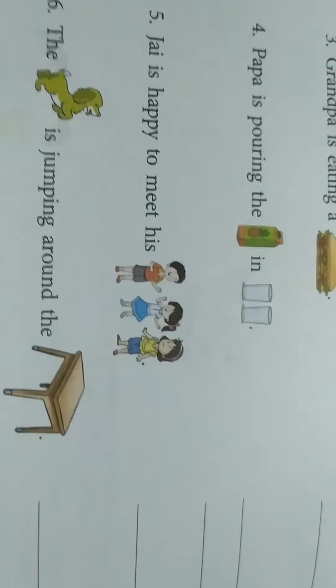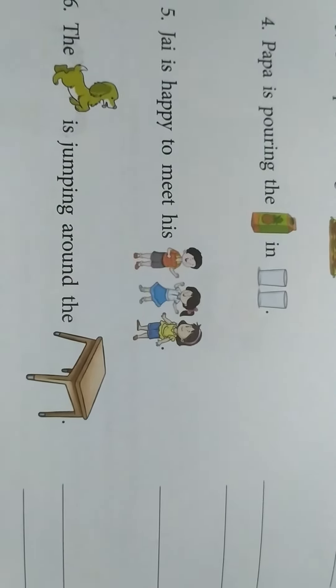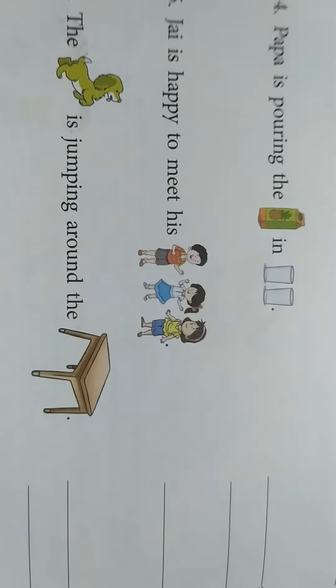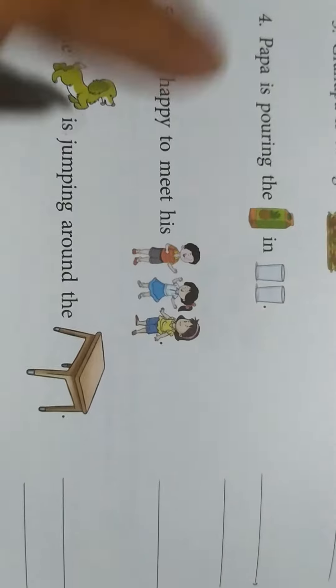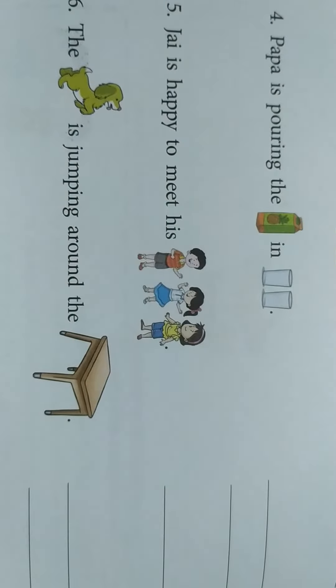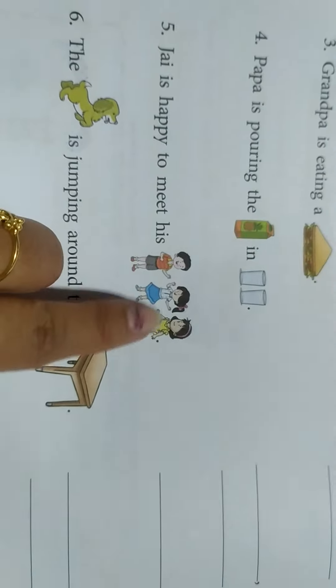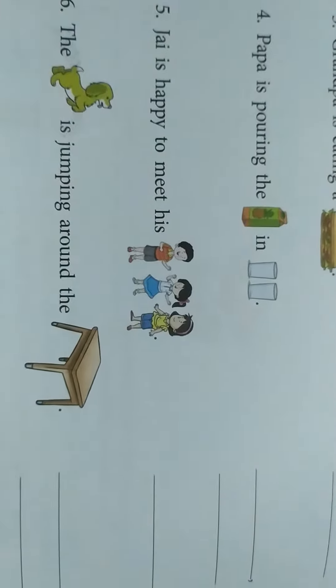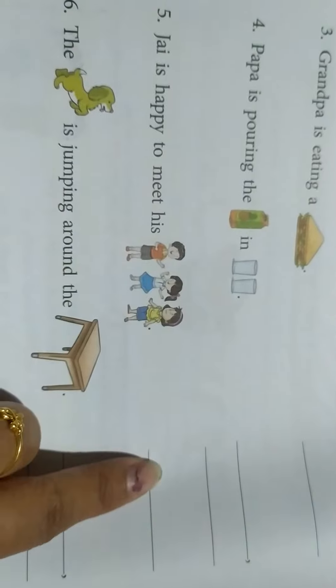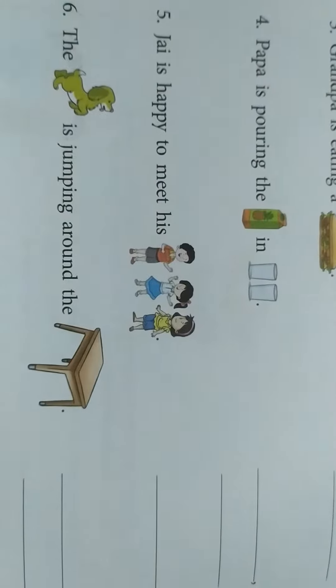Next question. Question number 5. Jay is happy to meet his... This is the picture of Jay. He is very happy to meet his... Who are they? They are his friends. So here in the blank, you have to write friends.